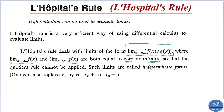Such limits are called indeterminate forms. That is, when the limit of f(x) as x tends to x₀ is equal to 0 and the limit of g(x) as x tends to x₀ is also equal to 0, both are zeros, we have the limit of this form 0/0, which is an indeterminate form.